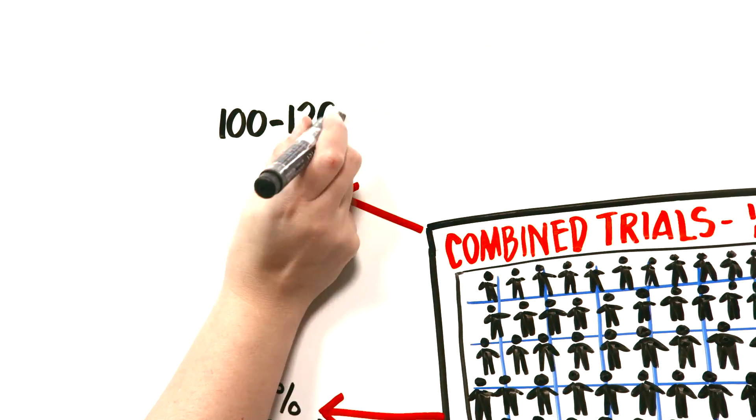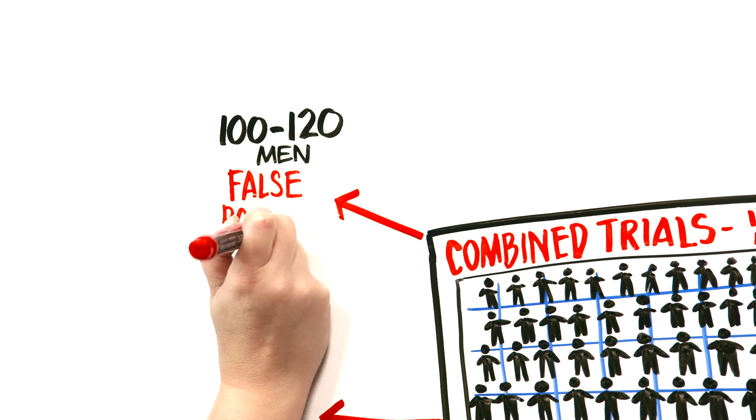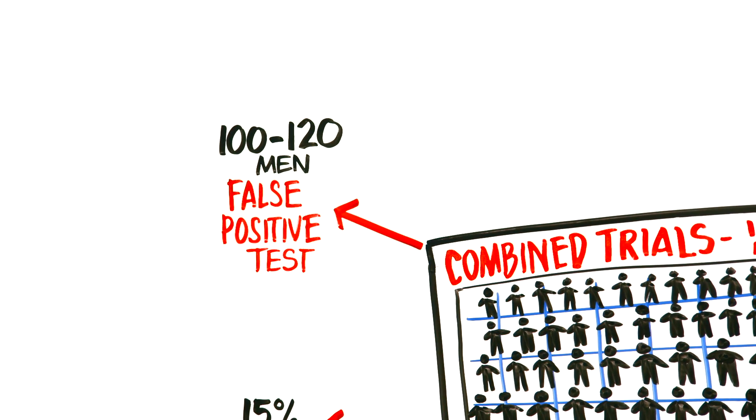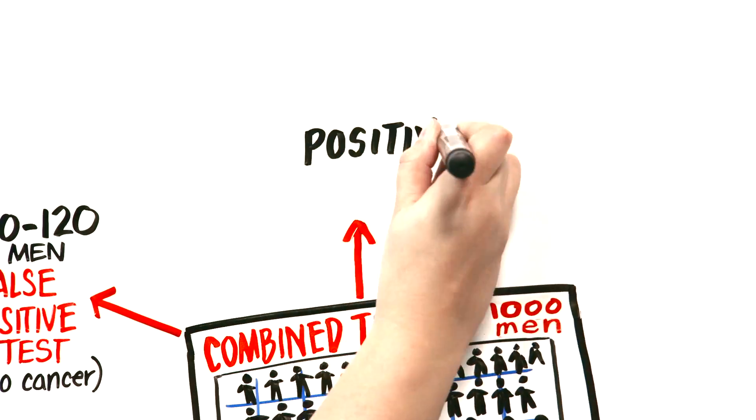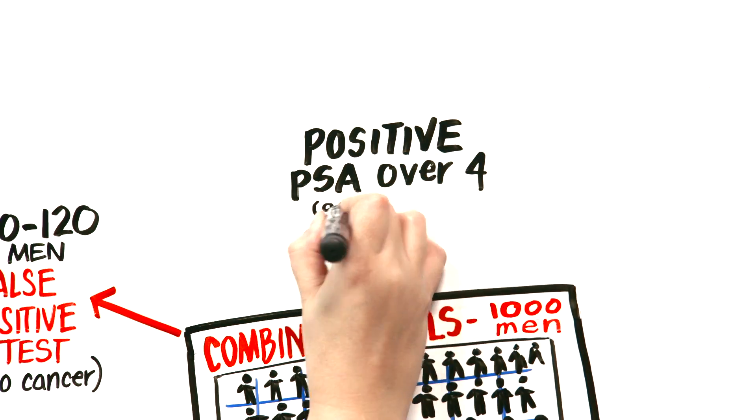100 to 120 men would have a false positive test where their PSA test would be elevated, but there would be no cancer. By positive, we typically mean a PSA over 4, but it can be age dependent.